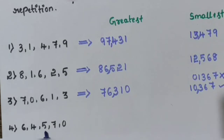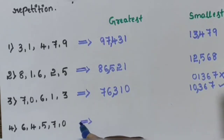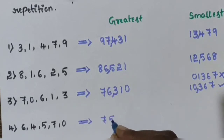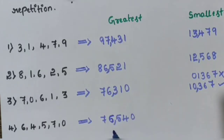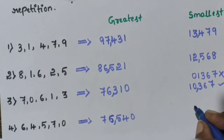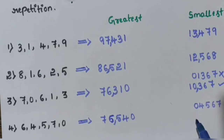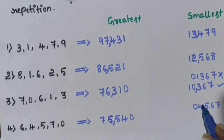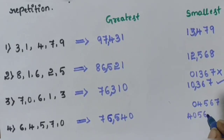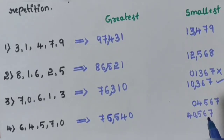Question number 4 — digits are 6, 4, 5, 7, 0. The greatest number arranged in descending order is 7, 6, 5, 4, 0 — so 76,540 is the greatest number. For the smallest, starting with 0 gives only a 4-digit number 4,567 — not a 5-digit number. So the next arrangement is 4, 0, 5, 6, 7 — so 40,567 is the smallest 5-digit number.